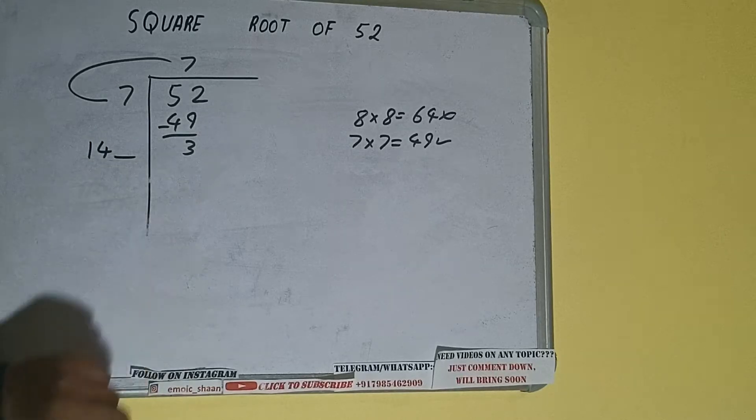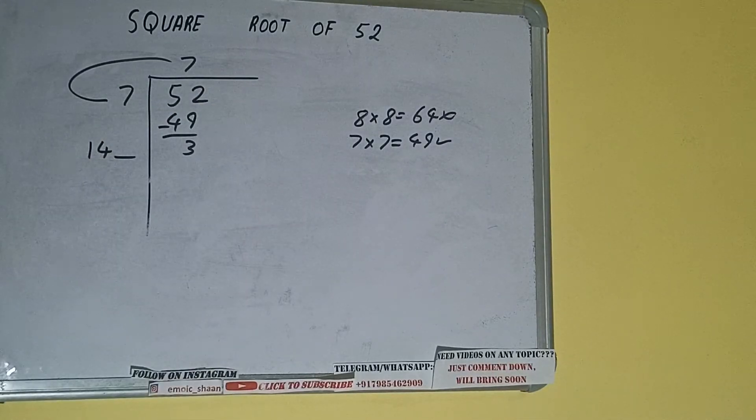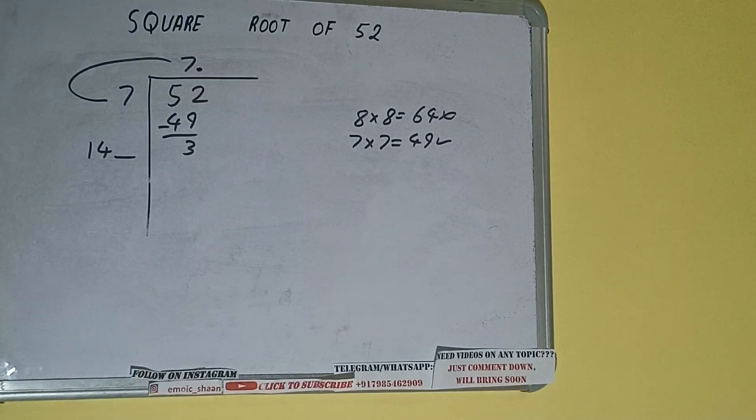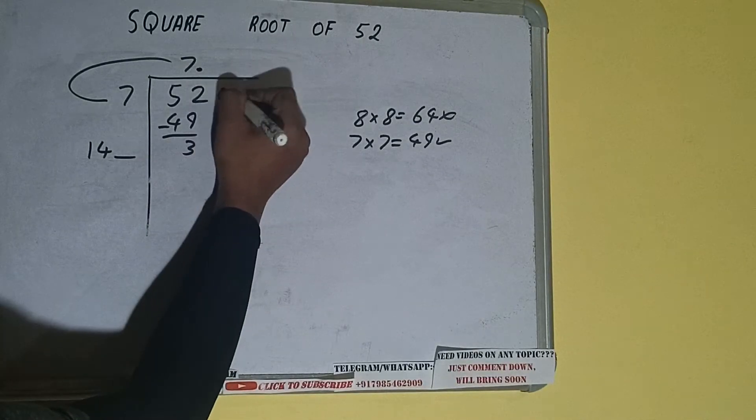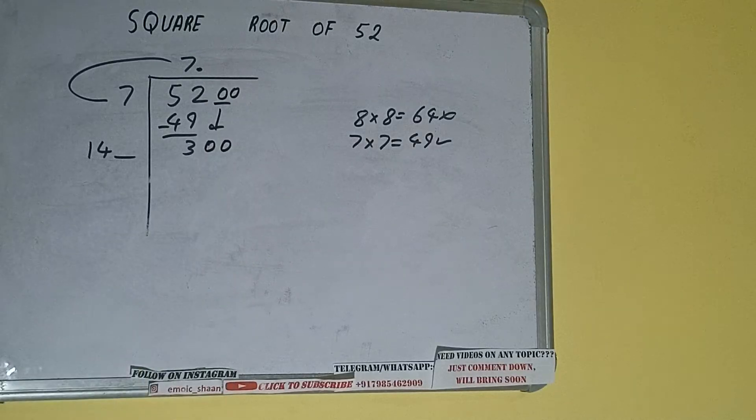And this number we need to make it big but we don't have more pair, so we'll put decimal. Once we put decimal, we can bring pair of zeros down.